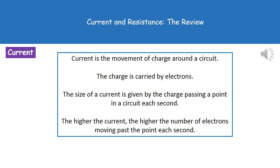And that charge is being carried by electrons. So what you might have been taught all the way back in year 7 is that current is the flow of electrons around a circuit. Now what we actually find is that the size of that current is given by the amount of charge that passes any given point each second. So the higher the current, the higher the number of electrons that move past that point every second.